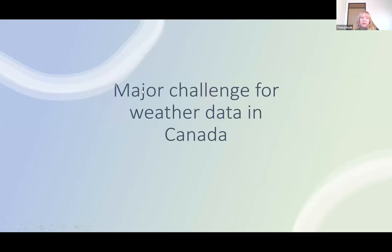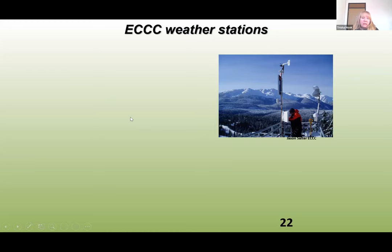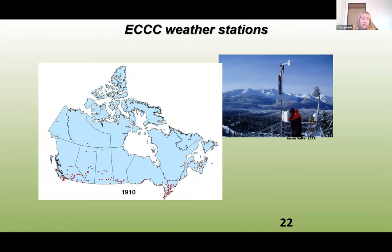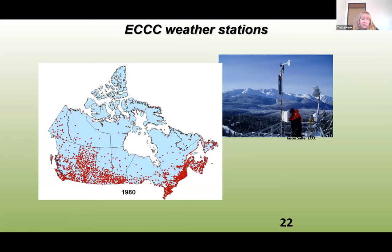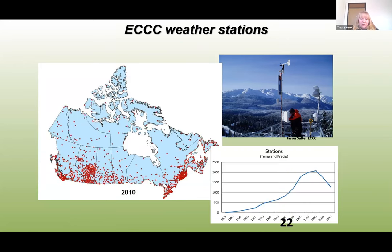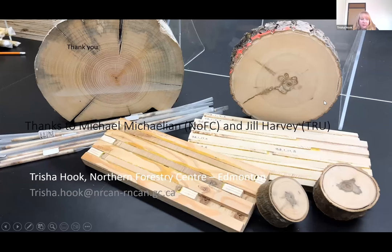So we have these products and they're both great. But one of the major challenges for weather data in Canada has been the decline of weather stations. This is a time series map over time — we had a great addition and then a great decline over the years. We have about as many stations now as we did 50 years ago, and they're continuously decreasing. So we're losing a lot of good weather data every year. That's all — thanks.